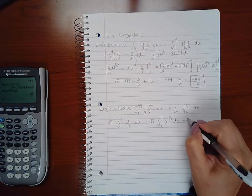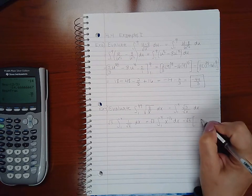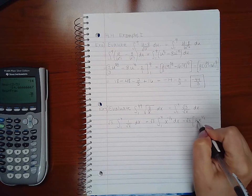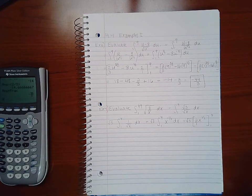Then when I go to actually evaluate the integral, I have to add 1. So I get x to the 1 half and then divide by the new power, which is the same as multiplying by the reciprocal. And I still have to evaluate it from 1 to 4.